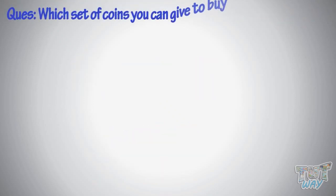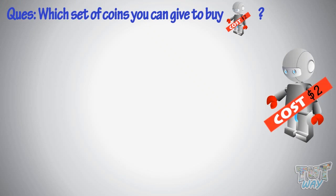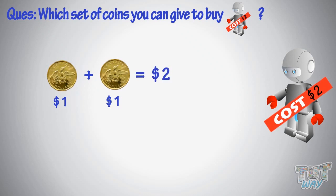Now, which set of coins can you give to buy this toy? You can give two loonies to make $2 or 200 cents. Many ways can be there — you can use smaller coins, too.